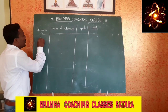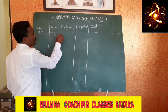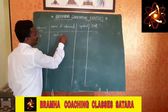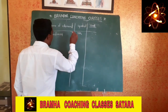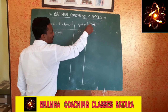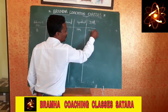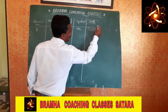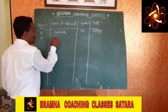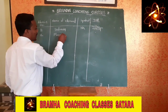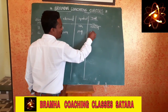Atomic number 11: Na, Sodium. The symbol Na comes from its Latin name. A mnemonic for Na is 'Naam Dev.' Atomic number 12: Mg, Magnesium — mnemonic 'Naam Dev Maharas.' Atomic number 13: Al, Aluminium.